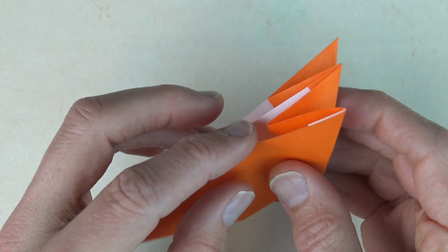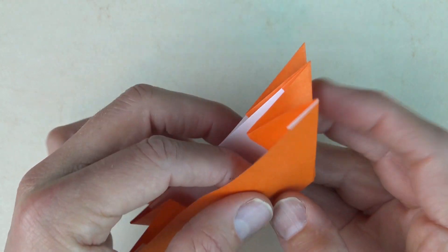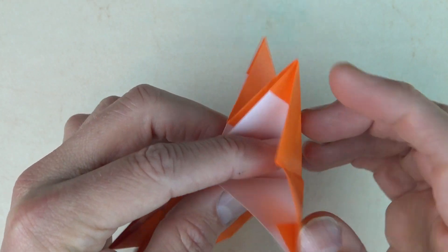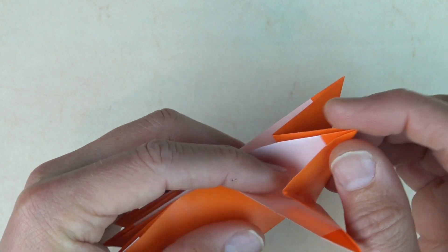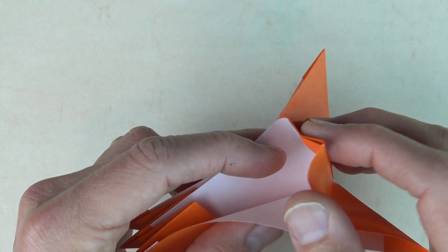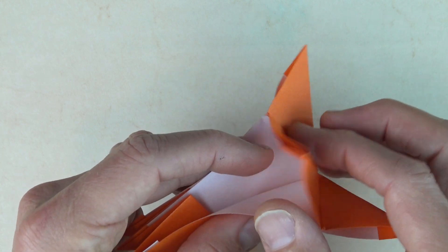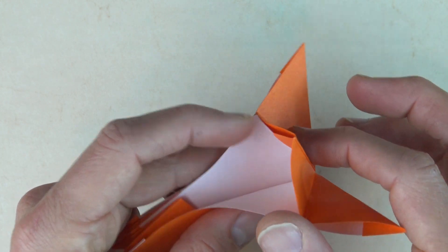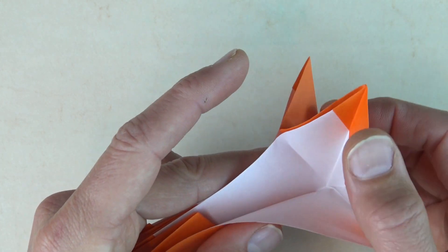And now open this slot. And we're going to reverse this flap. So first open it. And just fold. Fold it down. Making the fold right here. Just like turning the page of a book.